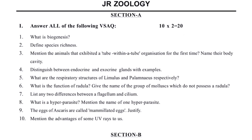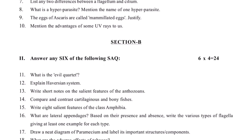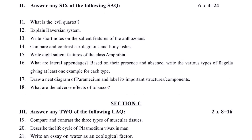Next, we have a screenshot of the second paper — the 4th and 5th chapter. We have the salient features of class Amphibia. Lateral appendages are the types of flagella. This is the same as a Paramecium diagram, and also cartilage and bone fish.